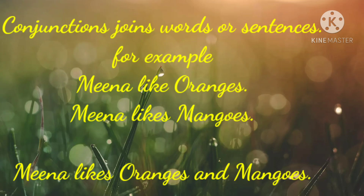For example: Meena likes oranges. Meena likes mangoes. By using a conjunction, we can say that Meena likes oranges and mangoes. So kids, we use different conjunctions to join the words or sentences together. Here, in this sentence, we have used 'and' to join the two sentences together.